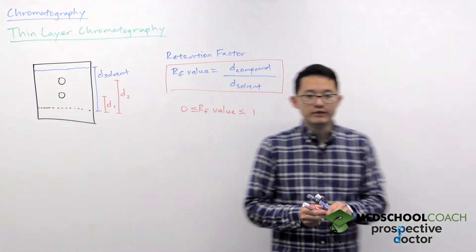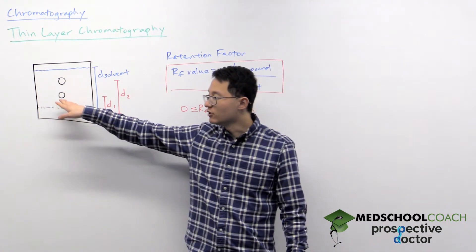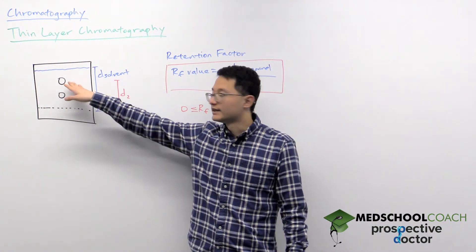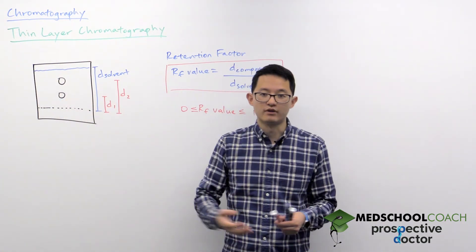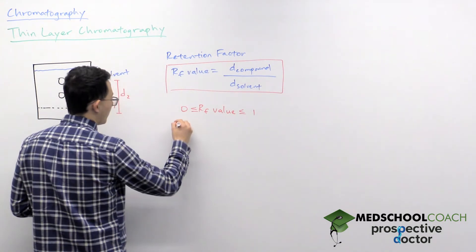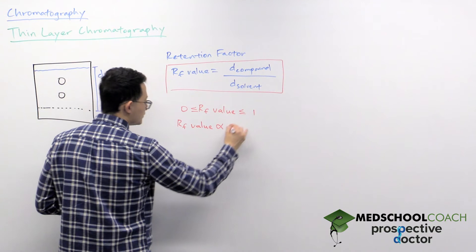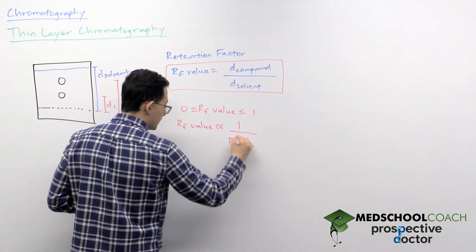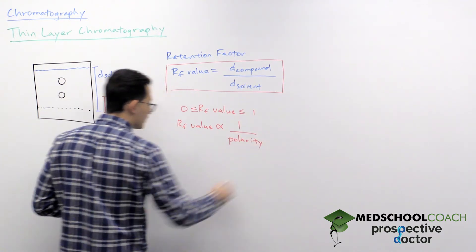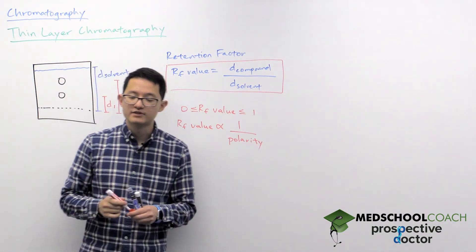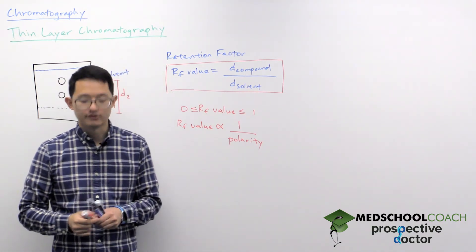Another thing we can take note about the RF value is again, the lower compound is more polar, the higher compound is less polar. This also tells us that the RF value is inversely proportional to polarity. More polar compounds have lower RF values, less polar compounds have higher RF values.